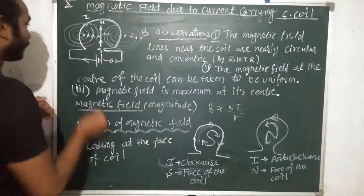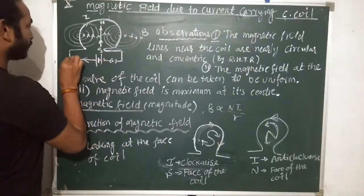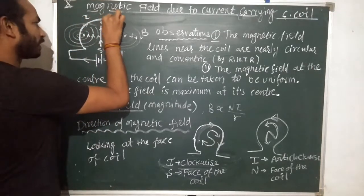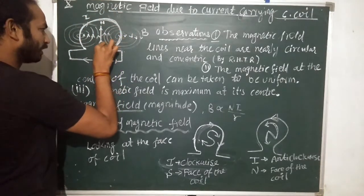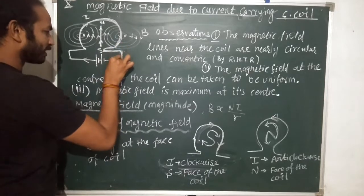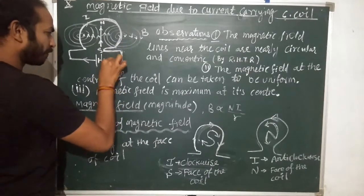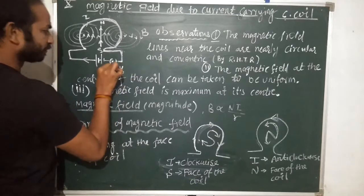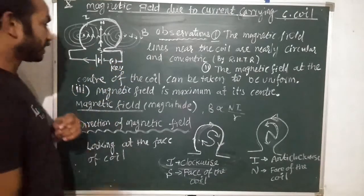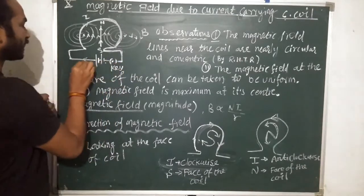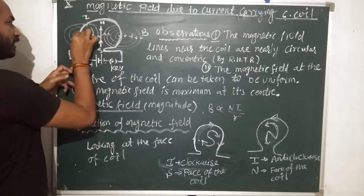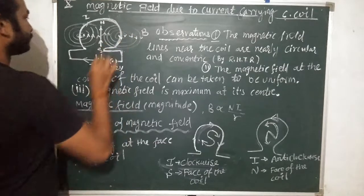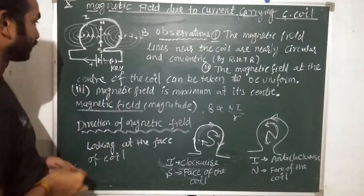I have made a very simple circuit. I am taking a circular coil, a connection with a battery, and a key. The key is closed, which means the switch is on, so there is some current flowing in the clockwise direction.